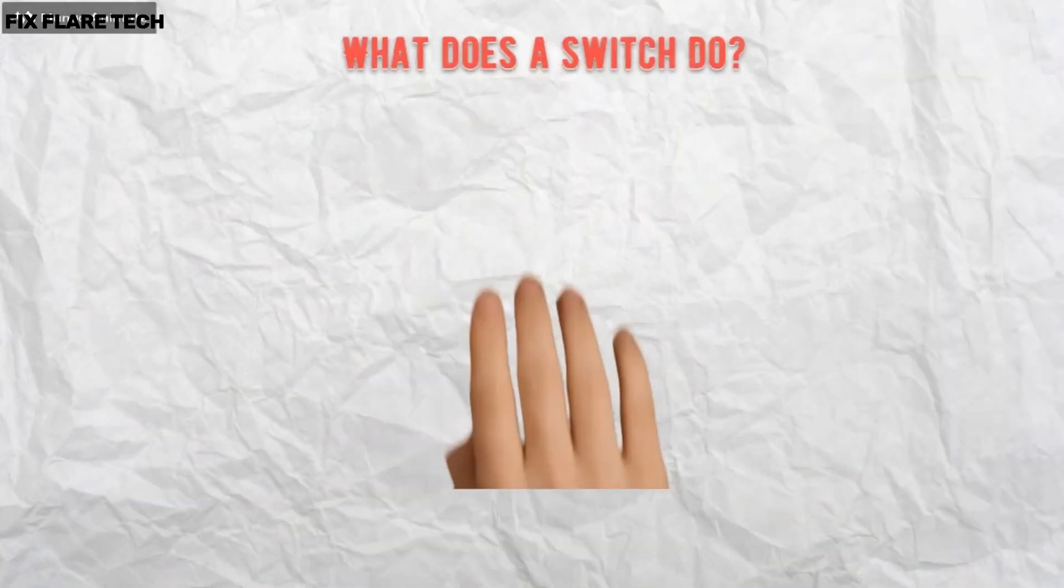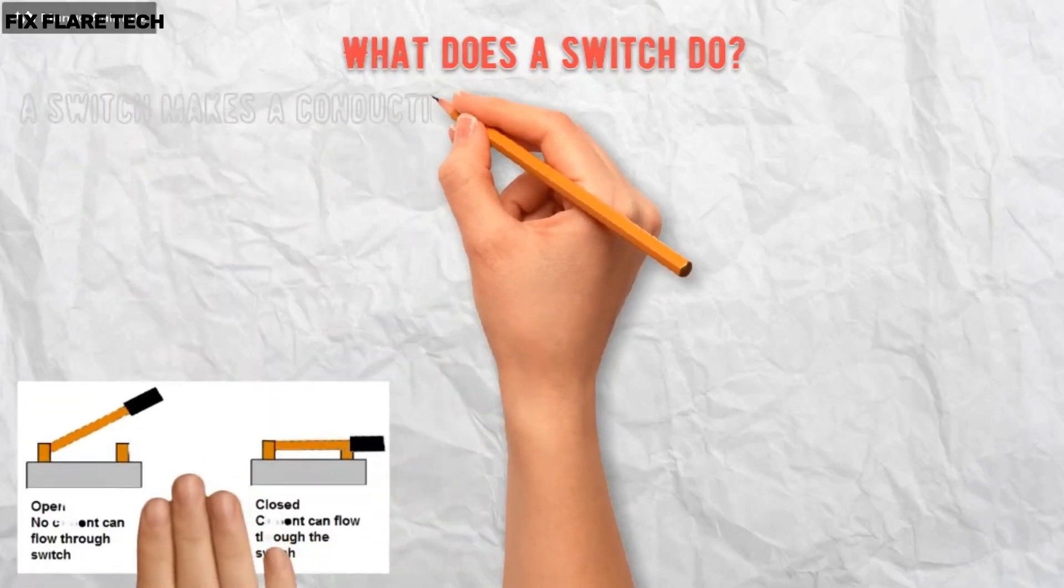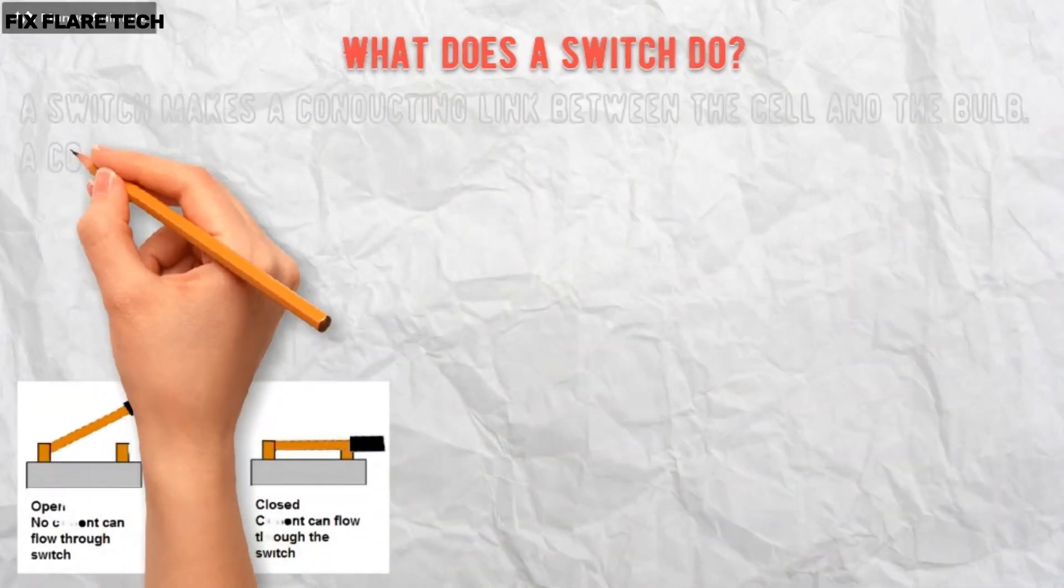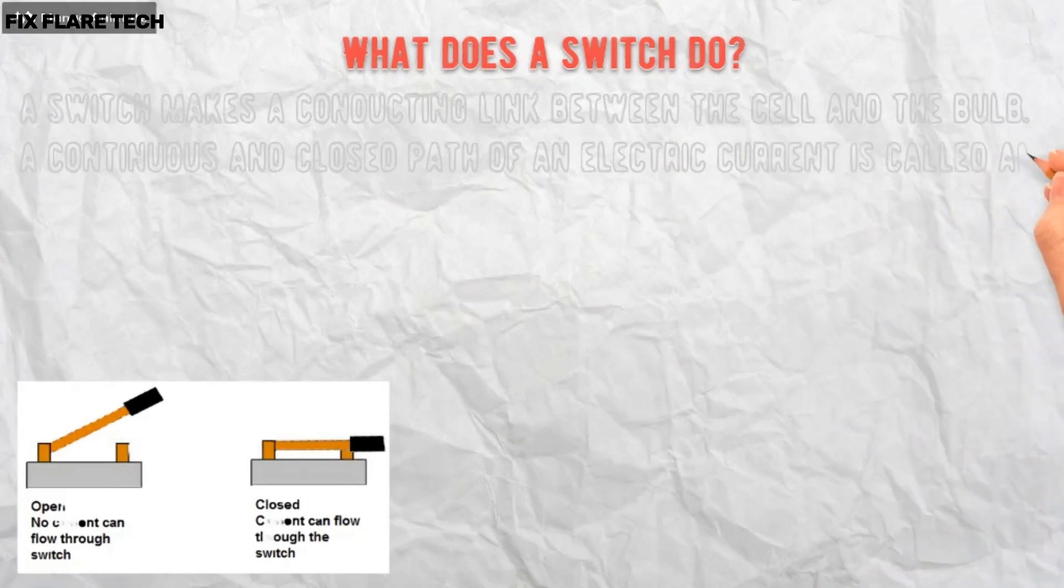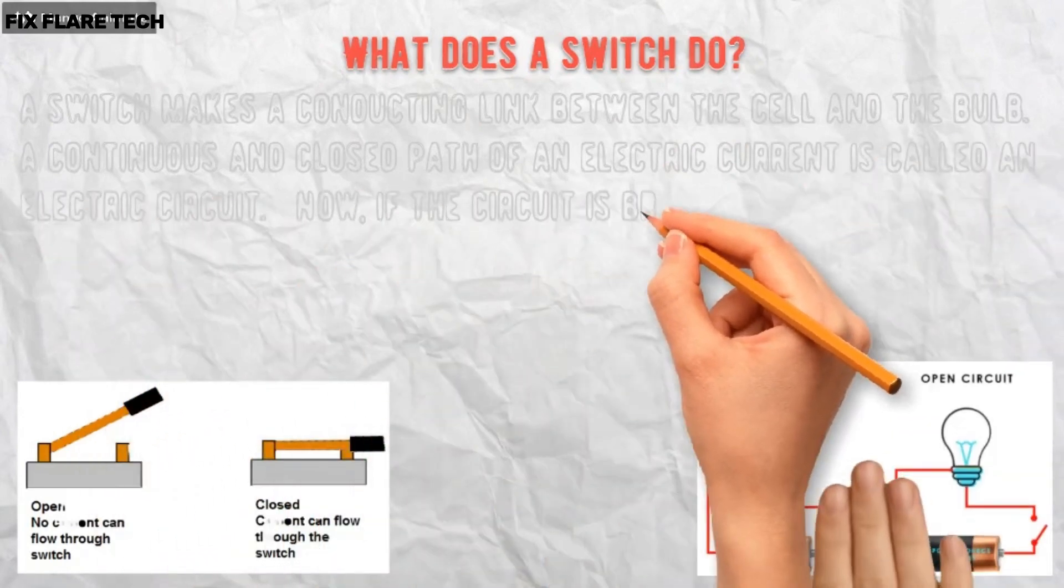What does a switch do? A switch makes a conducting link between the cell and the bulb. A continuous enclosed path of an electric current is called an electric circuit.